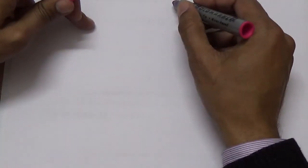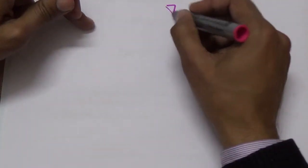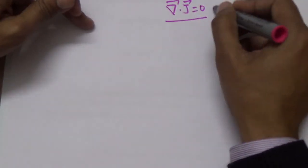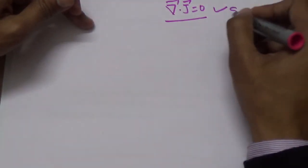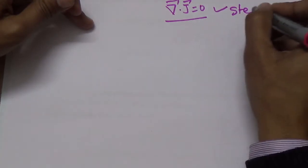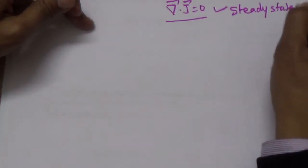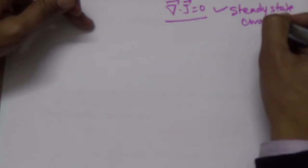Now let us check Ampere's law. We have seen that divergence of J equals zero for steady state current — that is, direct current, where ∂ρ/∂t = 0. This represents uniform flow: the amount of current entering one end equals the amount leaving the other end.